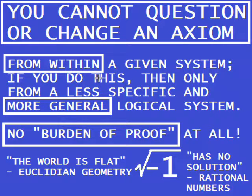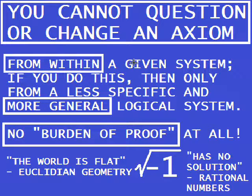When you're talking about proving something, you are really talking about this approach where you reduce questions to some final principles. And that's utterly important. You cannot question or change an axiom from within a given system. If you believe you can do this, then only from a less specific and more general logical system which itself will be subject to axioms. And there is no burden of proof at all for this — it is just a purely logical consideration.